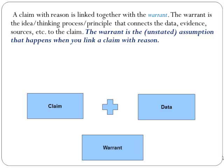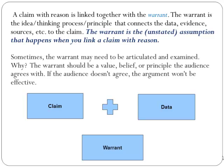A claim with reason is linked together with the warrant. The warrant is the thinking process, idea, or principle that connects the data, evidence, and sources. The warrant is the unstated assumption that happens when you link a claim with reason. Sometimes the warrant may need to be articulated and examined, because the warrant should be a value, belief, or principle that the audience agrees with. If the audience doesn't agree, the argument won't be effective.